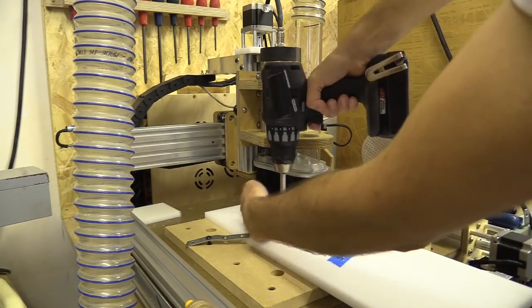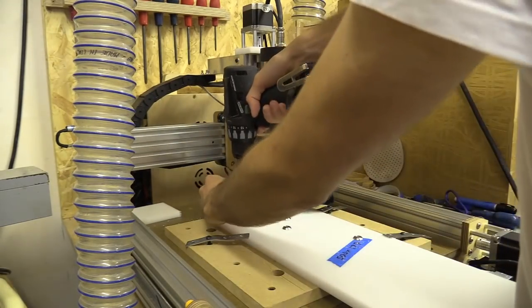I then cut the two sides of the gantry. I didn't redesign this part to use smaller V-wheels.